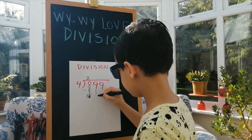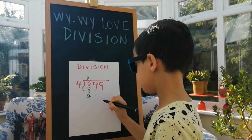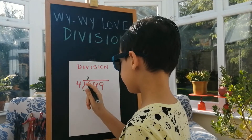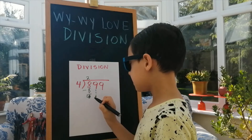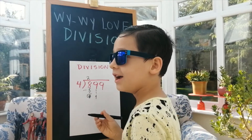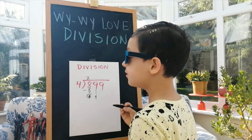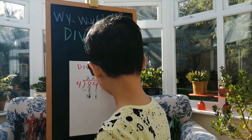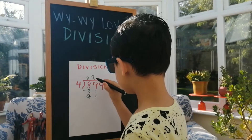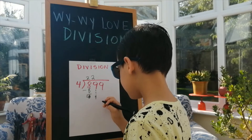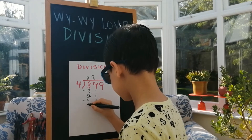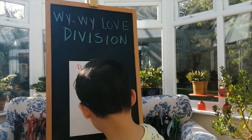Put the next number down — 9. How many 4's are in 9? There are 2. 4 times 2 is 8, put minus 8 equals 1. Remainder is 1.